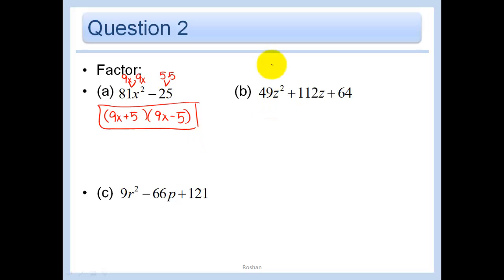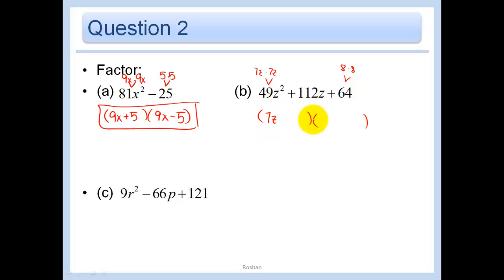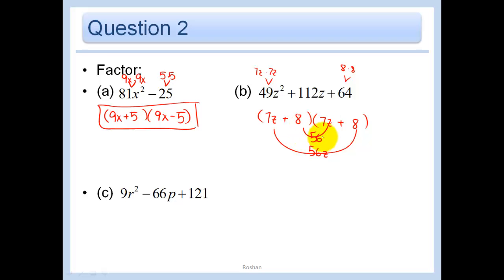This one - that's 7z times 7z, and this one is 8 times 8. So I'm going to just see if it happens to be one of those where it's the same thing. So 7z plus 8 and 7z plus 8. Let's see if that works: that would be 56z, and this would also be 56z. Add them up and we get 112z.